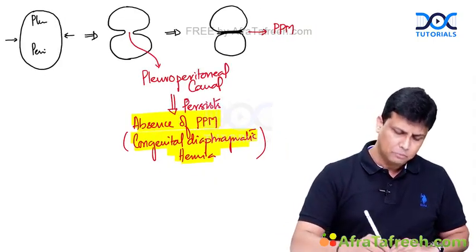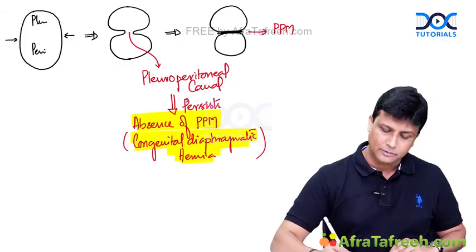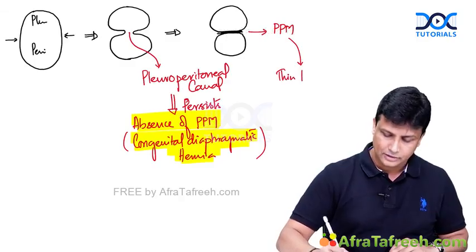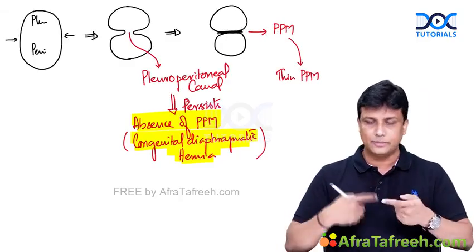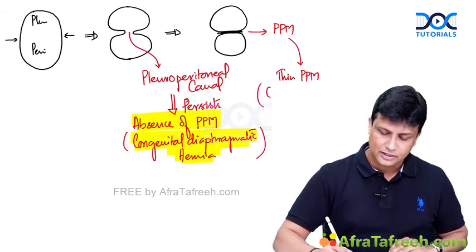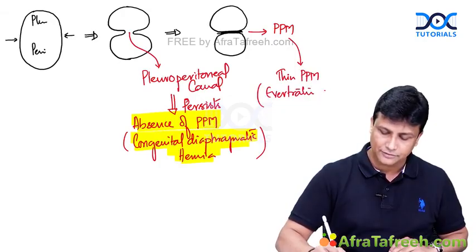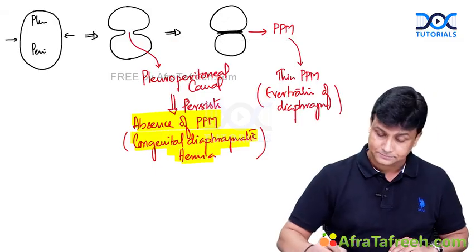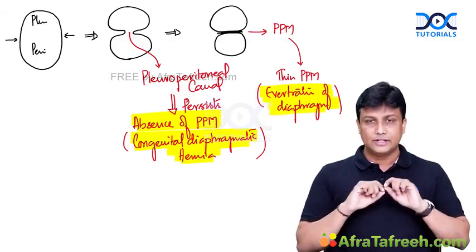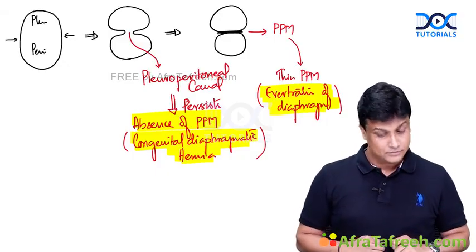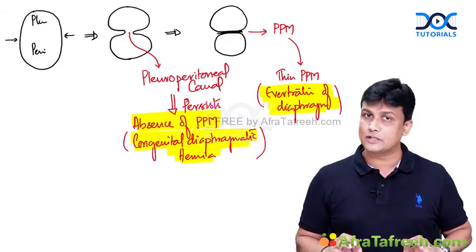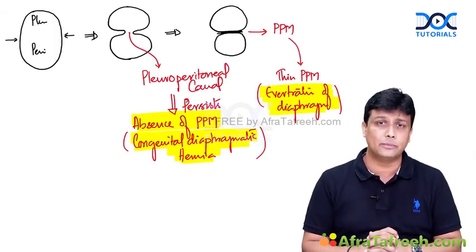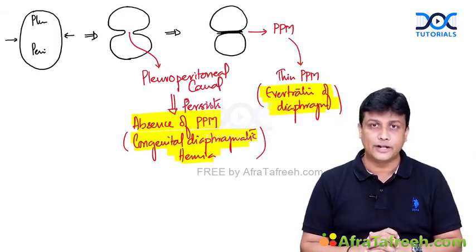Sometimes the pleuroperitoneal membrane is formed, but the problem is that it is very thin. When the pleuroperitoneal membrane is very thin, there will be eventration of the diaphragm — a condition known as eventration of diaphragm, which has also been tested in exams. So two conditions to be clear on: if the membrane is very thin, it leads to eventration of the diaphragm; if it is not formed at all — absence of the pleuroperitoneal membrane — then it leads to congenital diaphragmatic hernia.